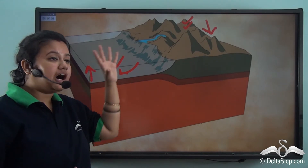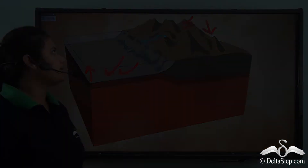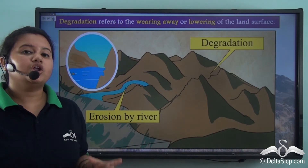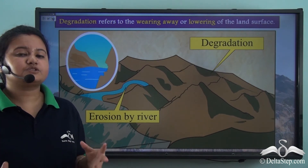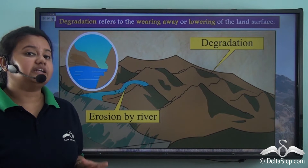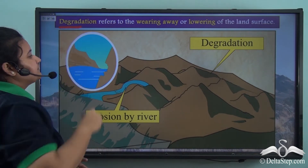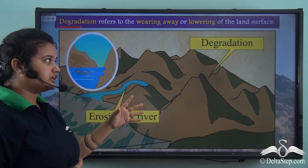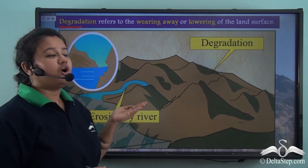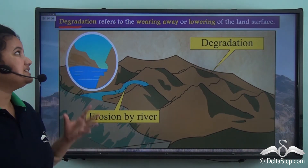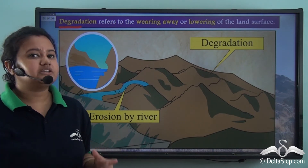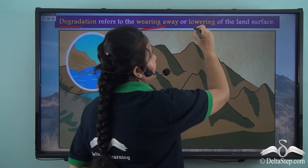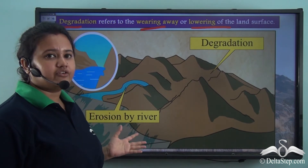There are few exogenic processes that lower the height of mountains. This process, in which the height of a mountain decreases, is known as degradation. In this video, we can see that the height of the mountain is gradually decreasing due to the action of wind or river — this process represents degradation. So what is degradation? Degradation refers to the wearing away or lowering of land surface due to the action of river or wind.